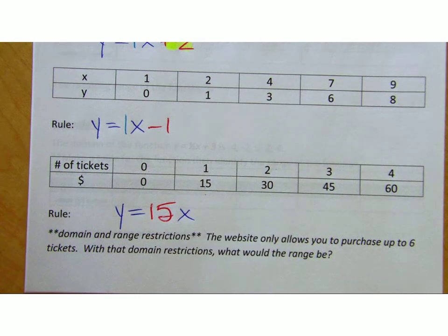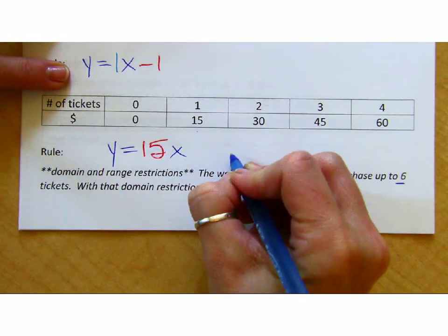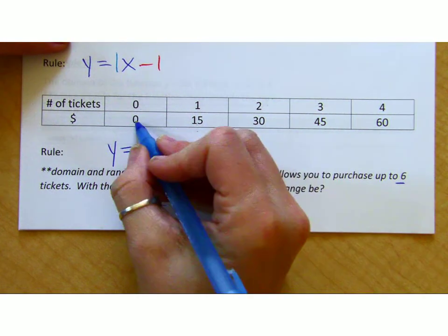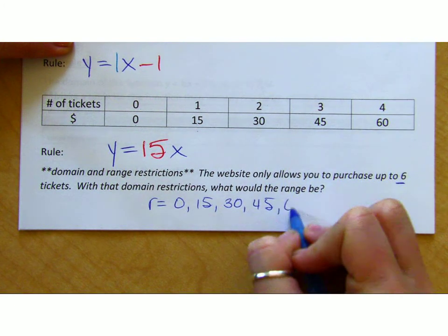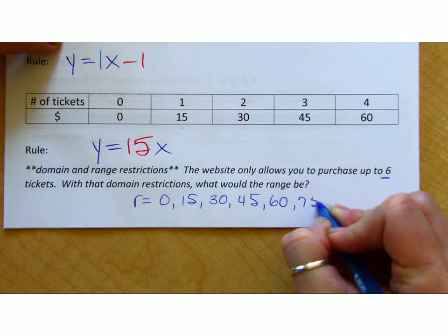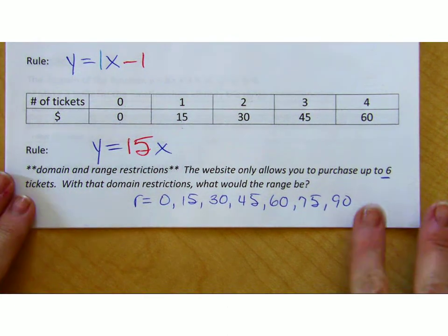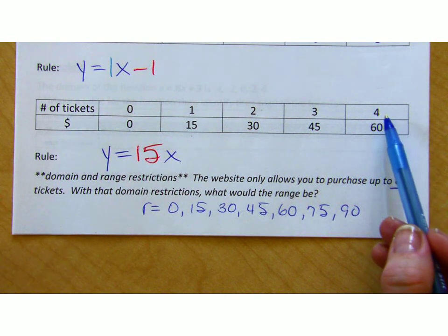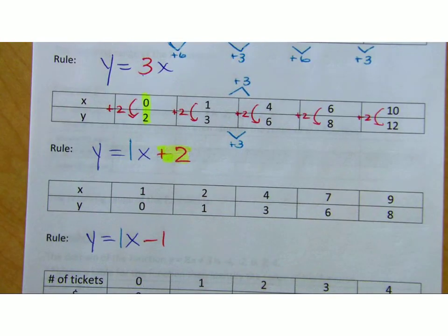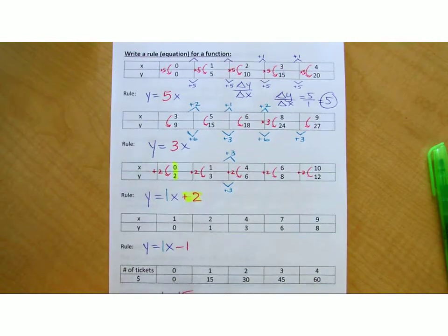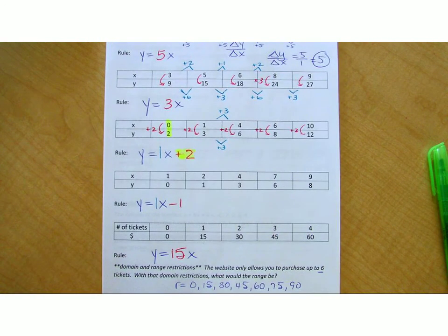So you know right now that your new equation is y equals 15x, correct? Which means if you can purchase up to six tickets, what would your new range be? It's restricted, so my range right now is 0, 15, 30, 45, 60, and then what? 75 and 90. Can it be 105? No. So do you understand what I mean by restrictions? If you restrict the number of tickets I can buy, which is your domain, then that restricts the amount of money you can spend, which is your range. So when you are writing equations or rules for tables, you are looking for whether you're multiplying it by something or whether you're adding or subtracting something to it, and we're coming up with pretty basic equations as of right now.